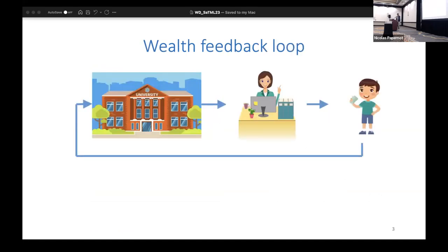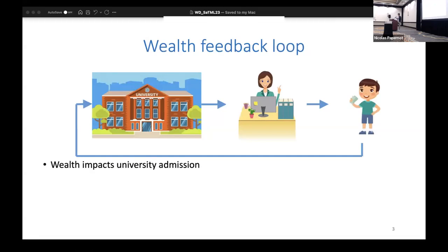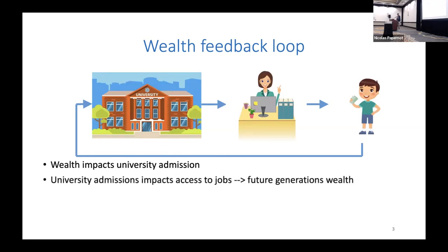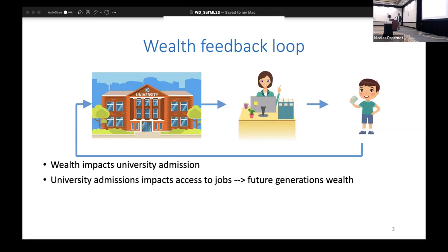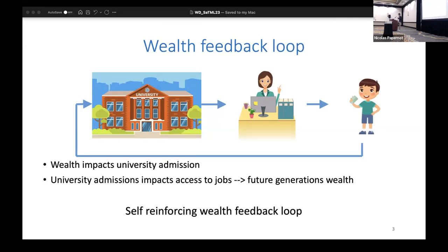More precisely, we want to study how feedback loops arise in the context of university admissions. Wealth impacts your admission to university, and again university admission impacts higher paying jobs and future generations' wealth. This is what we're trying to model: this self-reinforcing wealth feedback loop.